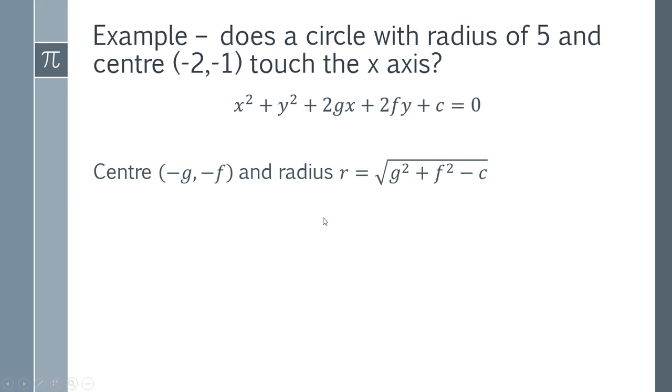So we can work out the center and the radius using this expression. So our center is minus 2 minus 1. And from that, we can see that we switch the sign. So we get g is 2 and you switch the sign there and f will be 1. And then you can solve this equation using your values of g and f, which is just the opposite sign of each of these. And you could rearrange that to get a value of r.